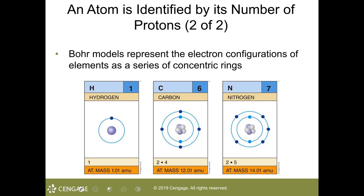Hydrogen has an atomic number of 1, and if the atomic number is 1, it has 1 proton. The same can be stated about carbon with 6 protons and the atomic number being 6.